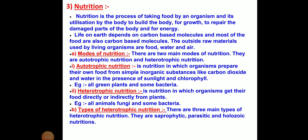Now we will see the modes of nutrition. There are two main modes: autotrophic nutrition and heterotrophic nutrition. Autotrophic nutrition is the mode in which organisms prepare their own food from simple inorganic substances like carbon dioxide and water in the presence of sunlight and chlorophyll — this is the photosynthesis process. All green plants and some bacteria are able to make their own food.